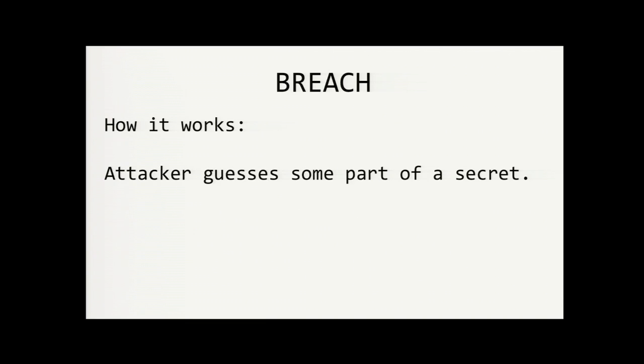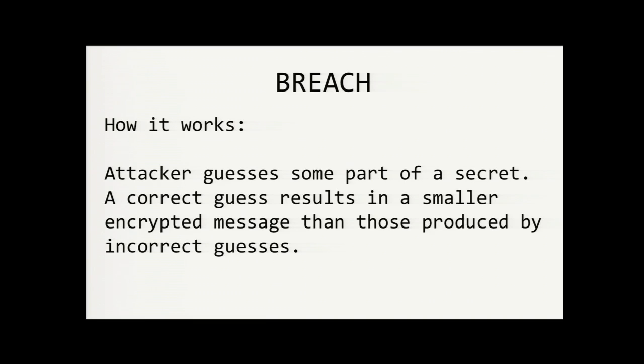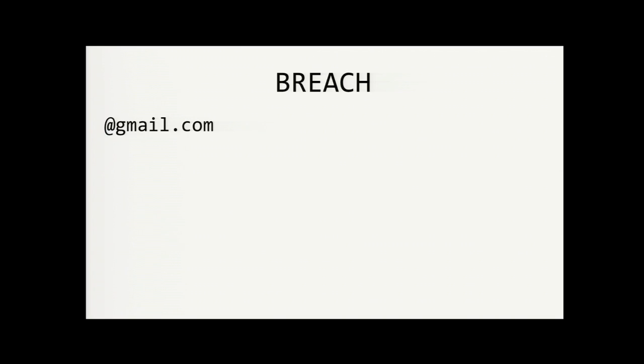So it starts with a blind guess. If that guess is correct, then the encrypted message size would be smaller than it would be for an incorrect guess. That's because the response contains both the guess and the secret. So an example initial guess might be the suffix of an email address, for example, at gmail.com. So once that's found, then that guess is just expanded letter by letter until the full secret is finally revealed.